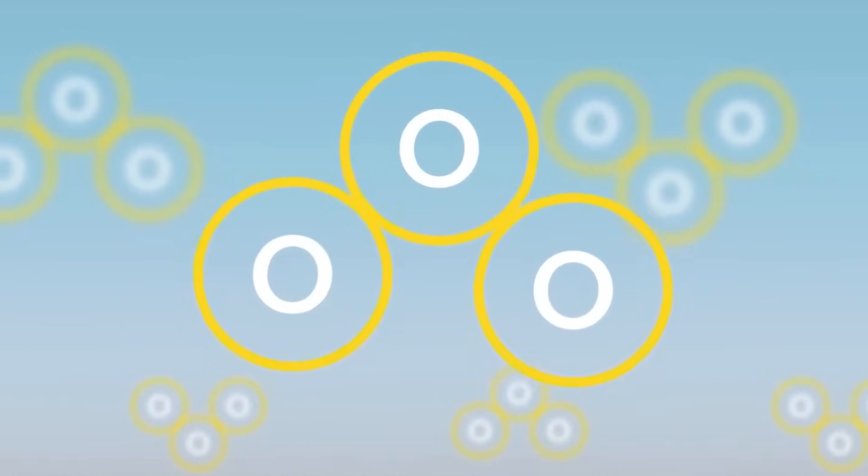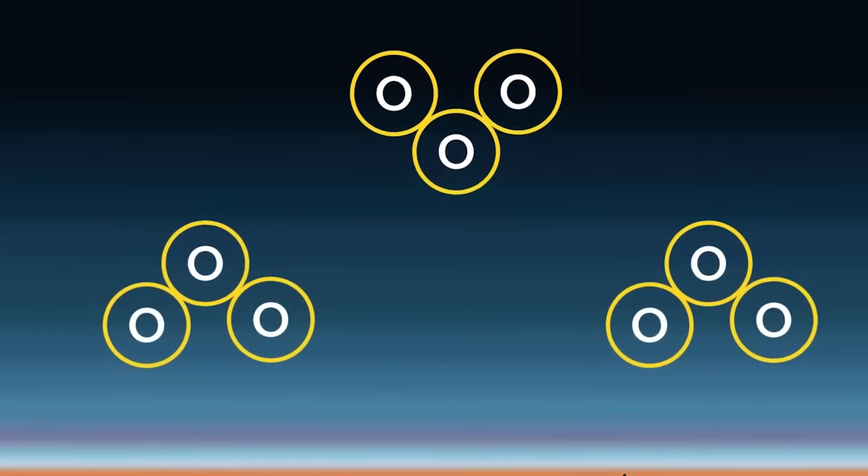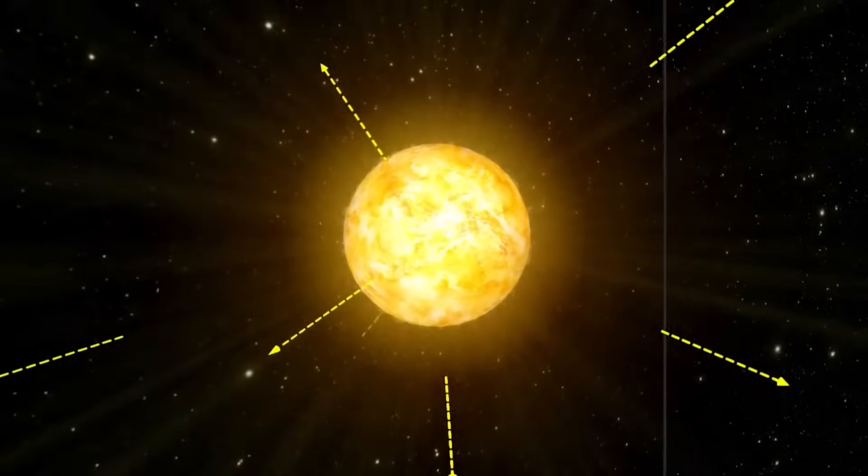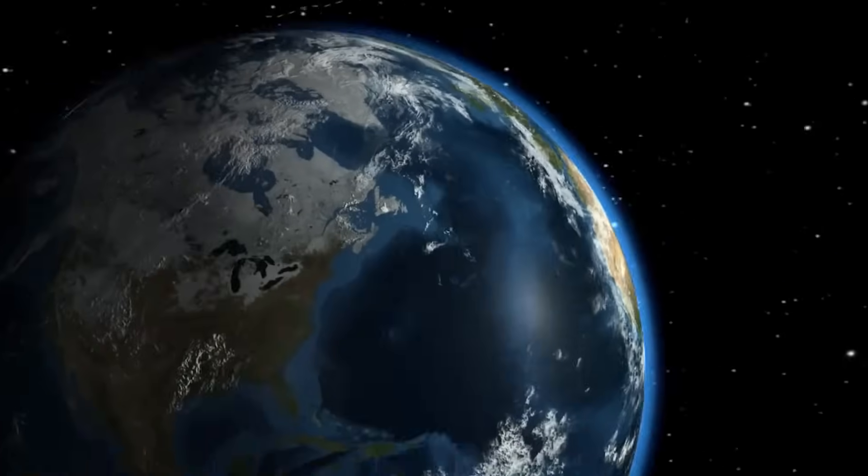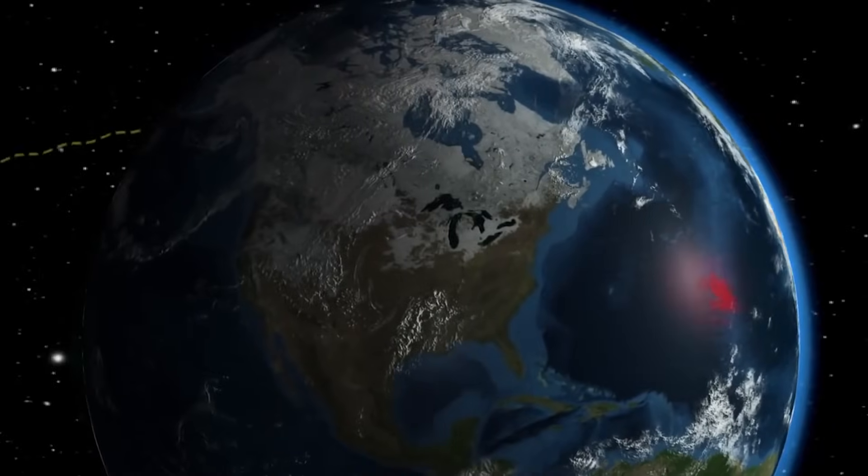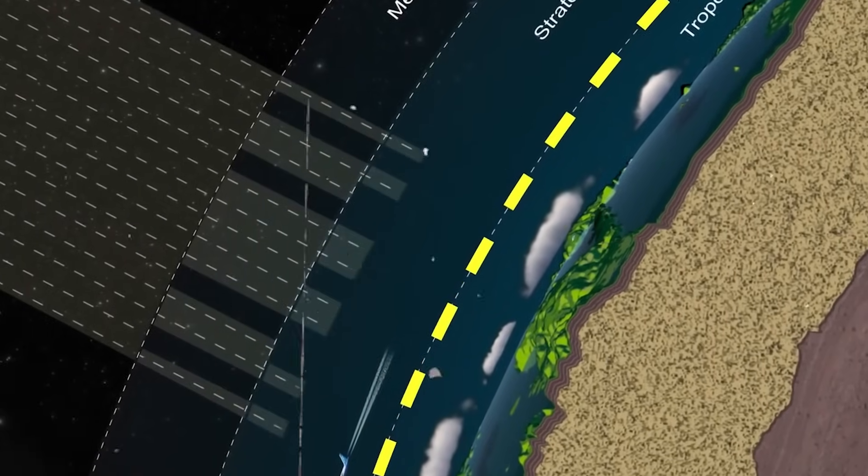This radiation can break chemical bonds in the atmosphere, leading to the formation of new compounds or the destruction of existing ones, such as ozone. These atmospheric changes might result in shifts in weather patterns, potentially affecting global temperatures, precipitation cycles, and wind patterns. The impact on the Earth's climate could have cascading effects on ecosystems, agriculture, and water resources.